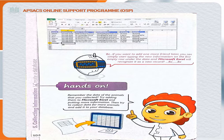The hands-on activity says: remember the data about animals that you collected in task one. Try adding that data into Microsoft Excel and include more information. Then try to collect data for more animals and add it to your database. So the data collected in task one is to be entered into MS Excel in task three, defining the appropriate fields.